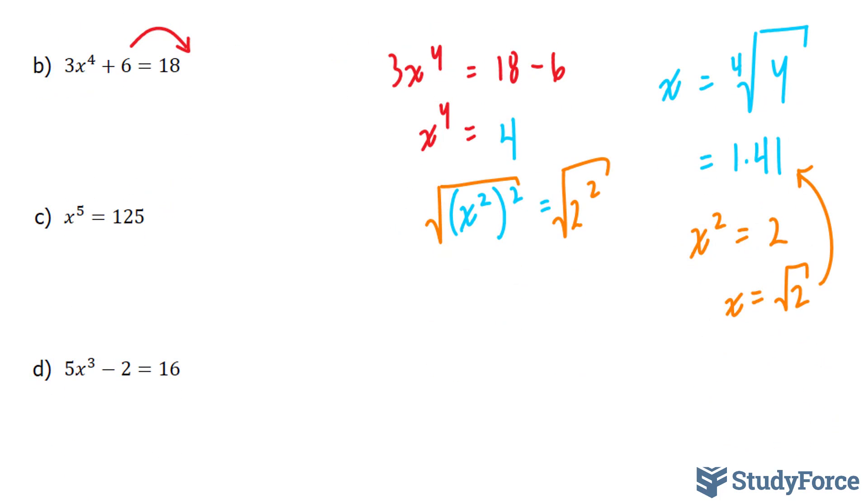Let's move on to c. In c, we have x to the power of 5 is equal to 125.